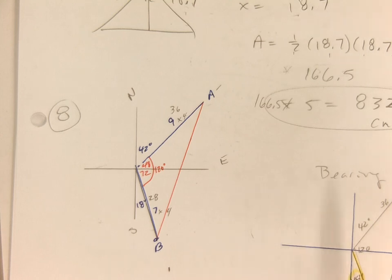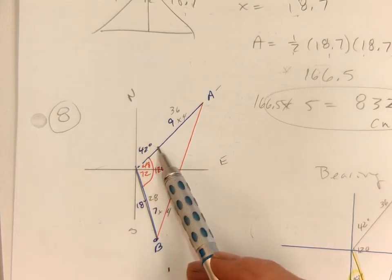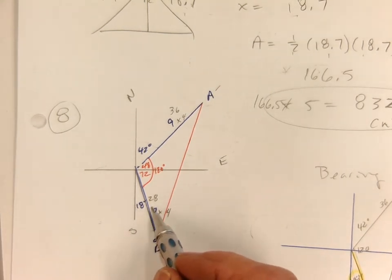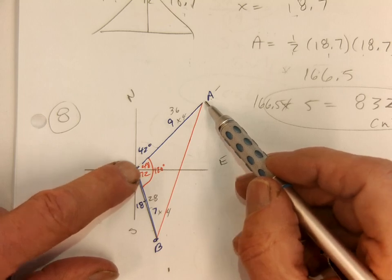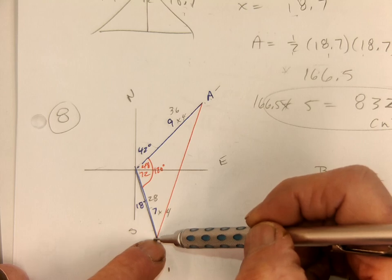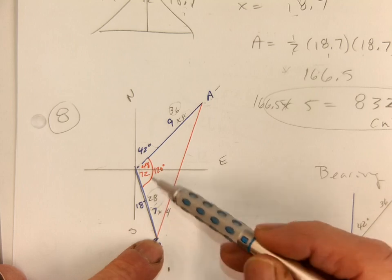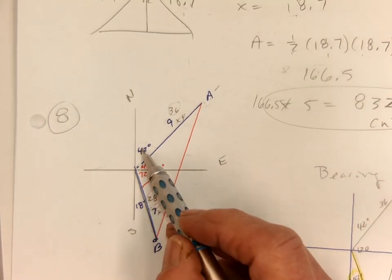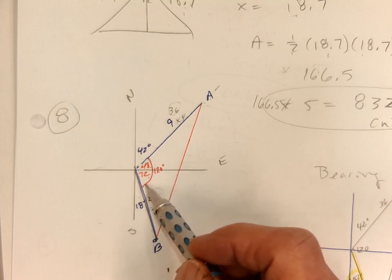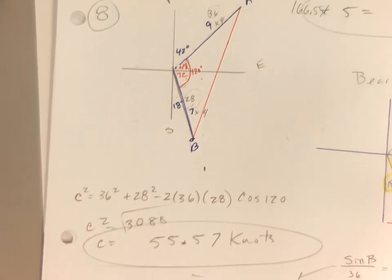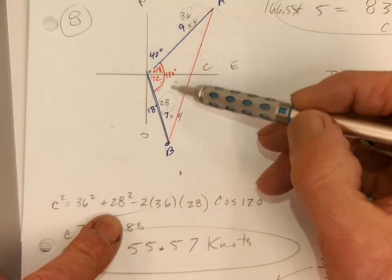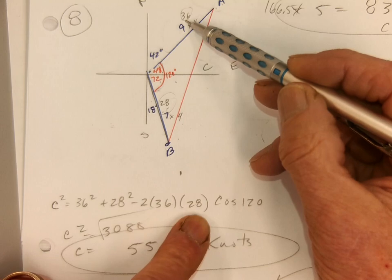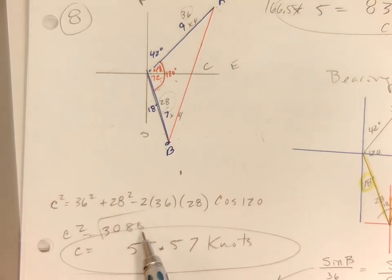Number 8: there's a 42 degree angle, which I drew in with a protractor, and an 18 degree angle drawn in as well. I scaled the distances down — 9 and 7 scaled by half — but I'm going for 4 hours, so I multiplied by 4, getting 36 and 28. Now I need the middle angle: 42 and 48 make 90, and 18 and 72 make 90, so the middle angle of this triangle is 120 degrees. Using the law of cosines: C squared equals 36 squared plus 28 squared minus 2 times 36 times 28 times cosine of 120. I got about 3,088, took the square root, and got about 55.57.